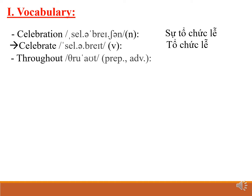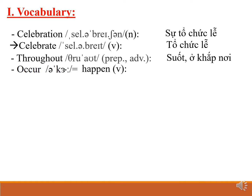Throughout — it is a preposition and an adverb meaning suốt or ở khắp nơi. Occur — can you give me the synonym of occur? Happen. It means xảy ra, diễn ra.